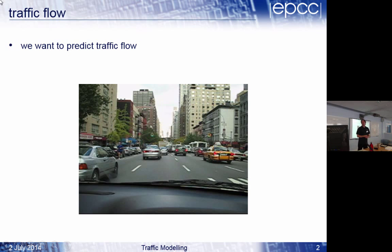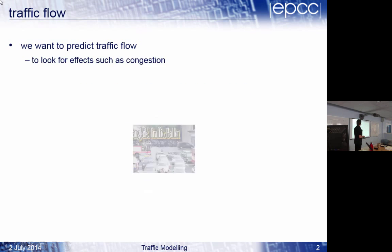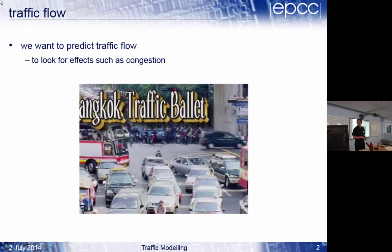So we want to predict traffic flow. I don't think this video is going to work - there's a video here, but apparently Bangkok traffic is terrible. The traffic's completely stationary. So you might want to predict traffic flow for a number of reasons. You might want to say, how am I going to dynamically alter the traffic lights to prevent congestion? Or you might be saying, if I put an extra lane on this motorway, is it going to help the traffic? So predicting traffic flow is actually quite an important thing.